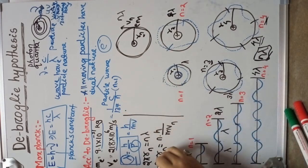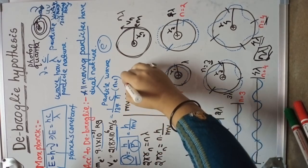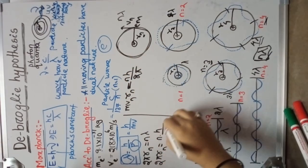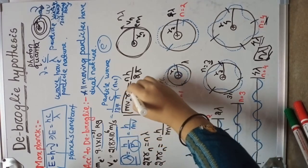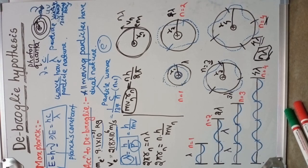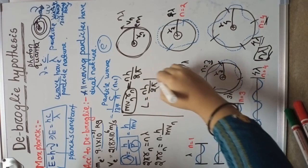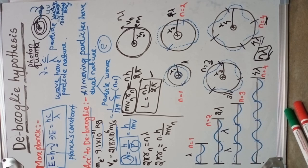Rearranging, m vn rn equals to n h by 2 pi. What is m vn rn? This is the angular momentum of the electron. So L equals to n h by 2 pi.